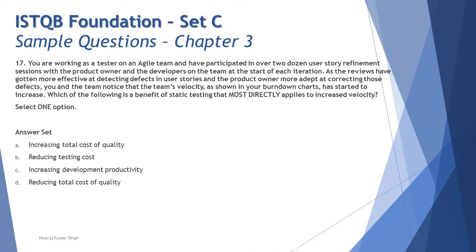We have four options. Option A says 'increasing total cost of quality' — but this is about reducing the cost of quality, so A is not the right answer. Option B says 'reducing the testing cost' — this is tricky, because increasing velocity is a sign of increasing overall development productivity, not just testing. You cannot say testing cost alone is reduced, so B is incorrect.